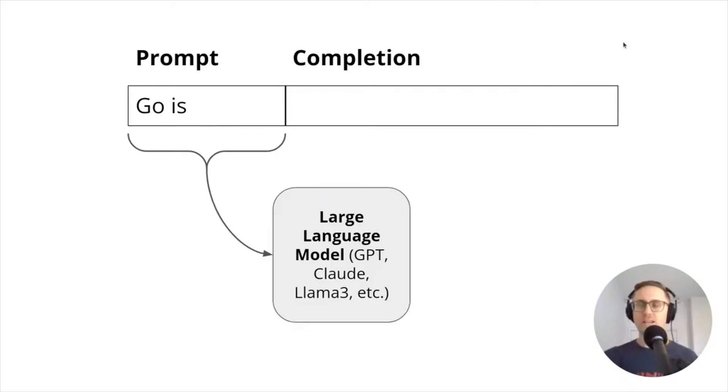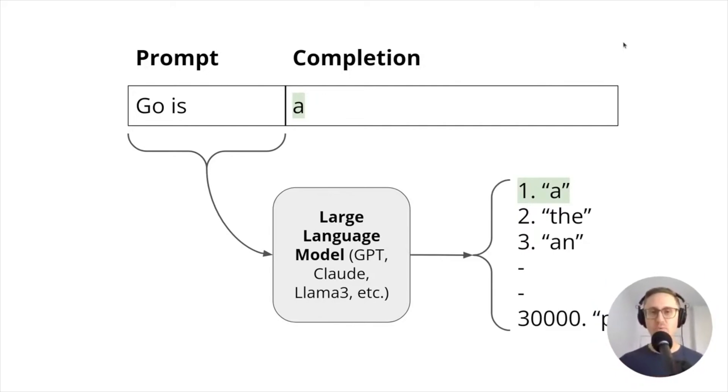If we dig in a little bit here, this prompt is going into the large language model—this might be a GPT model or Claude from Anthropic; in our case it was Llama 3. What the model is doing is nothing more than, although it can be quite powerful when we apply it appropriately, predicting a next word or next token.